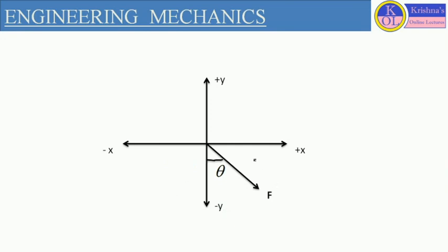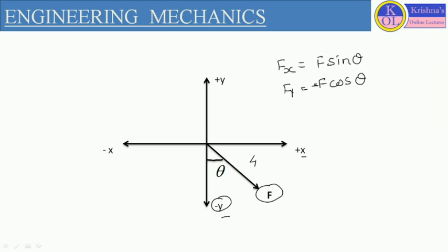Now let us consider another case when this force F is existing in the fourth quadrant. In this fourth quadrant, F is making angle theta with the minus y direction — y is minus and x is plus. So Fy will be minus F cos theta, and Fx will be plus F sin theta. By this way, as per the quadrant — first, second, third, and fourth — and as per the sign conventions, we can define the components of a resultant force. To resolve any resultant force into a number of components is called the resolution of force.